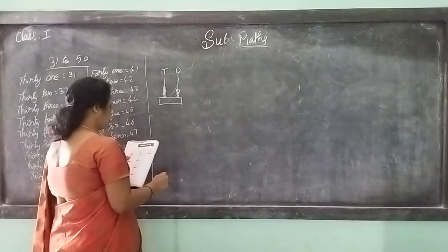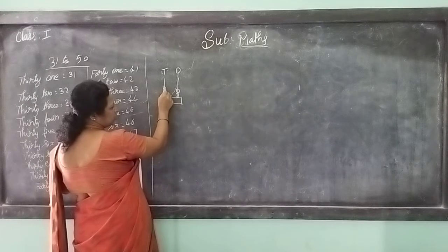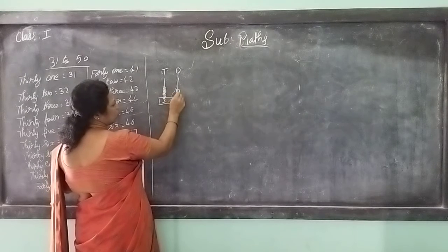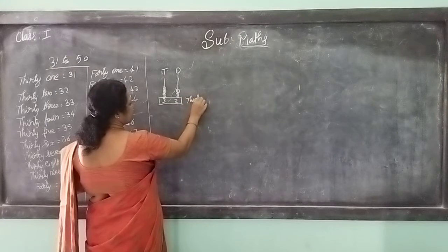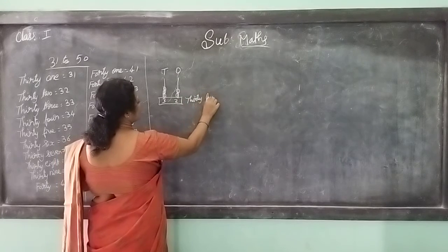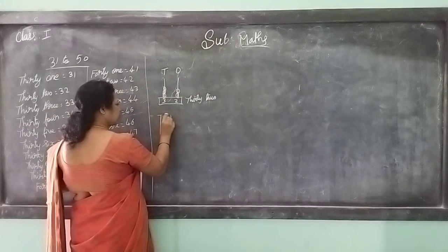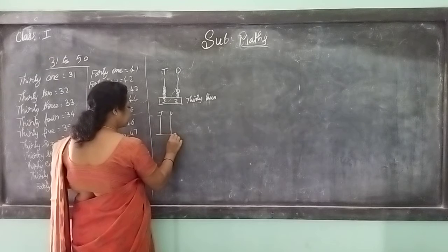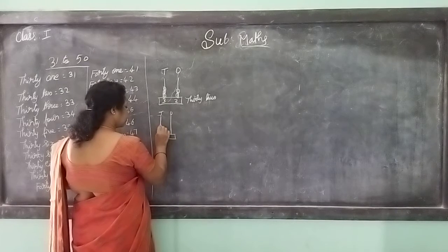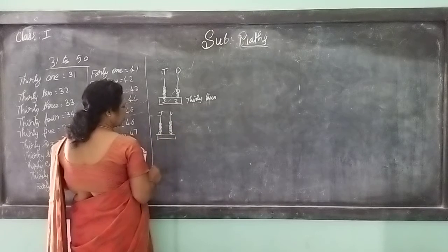How many tens are there? Count - 1, 2, 3 tens, and 2 ones. How much? 32 - T-H-I-R-T-Y T-W-O. Tens and ones, OK children.